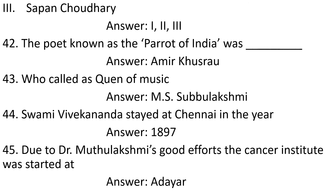Question 42: The poet known as the Parrot of India was. Answer: Amir Khusrau. Question 43: Who is called the King of Music? Answer: M. S. Subbulakshmi. Question 44: Swami Vivekananda stayed at Chennai, India in. Answer: 1897.